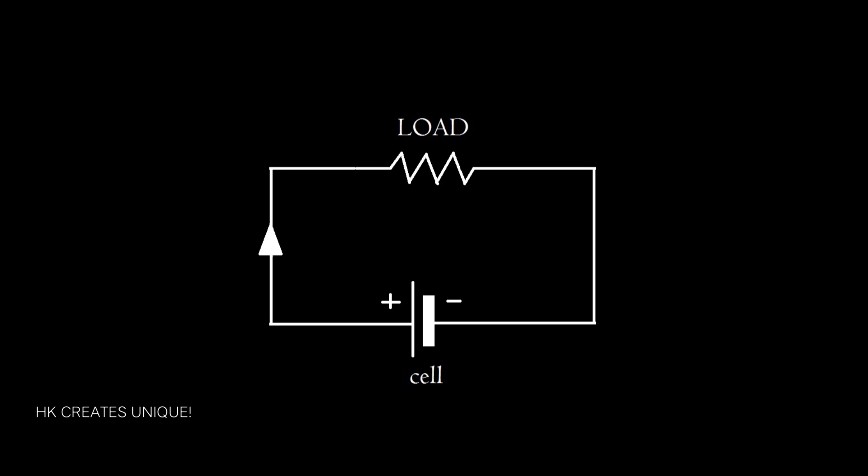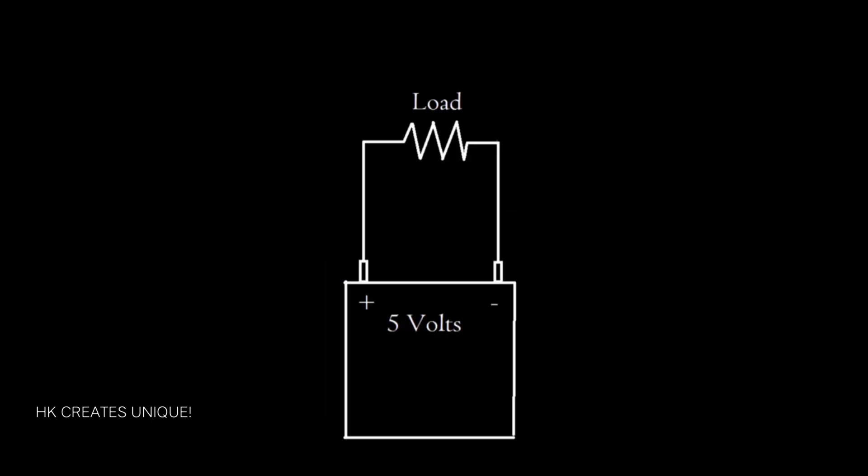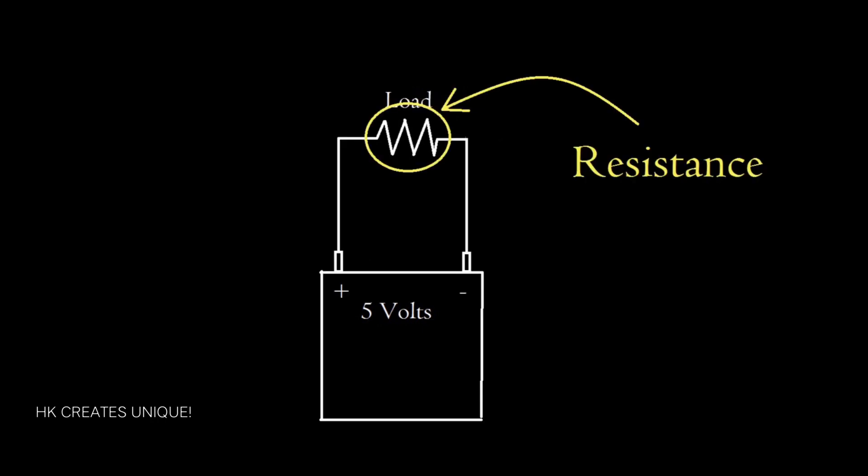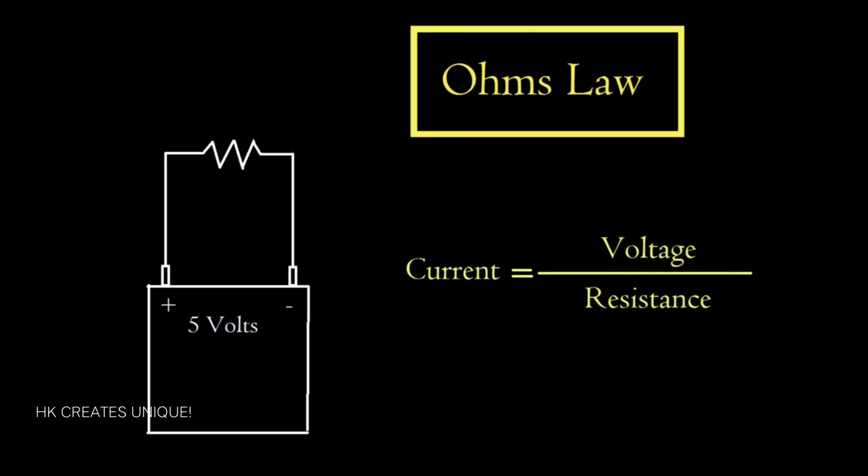Before starting the video, I want to talk about current flow. Suppose you have a 5V battery and you have connected a load across the terminals. Current flow always depends on the resistance of the load. Using this simple formula, known as Ohm's law, you can calculate current flow in the circuit.